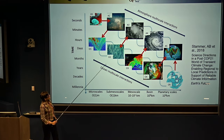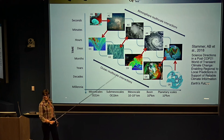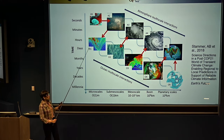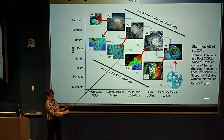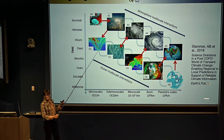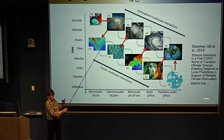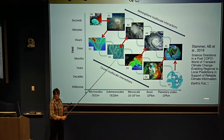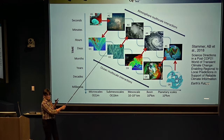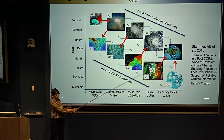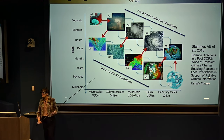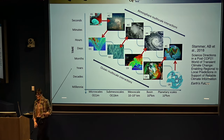This is a very simple cartoon because it has only the atmosphere and the ocean. In reality you have the ocean, the atmosphere, the cryosphere, the land, plants, animals, chemical tracers, the carbon cycle on top of all of this, and humans. So it's much more complex than what is shown here.